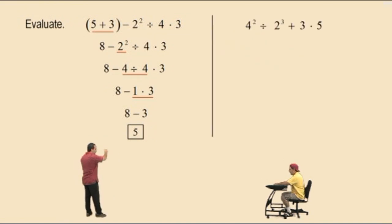Here we go. Let's do another one over there. 4 squared divided by 2 cubed plus 3 times 5. Oh, what fun. Okay. If we don't have parentheses, we'll do the exponents.